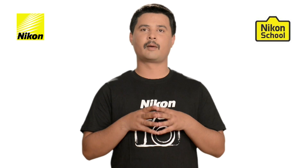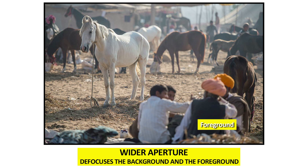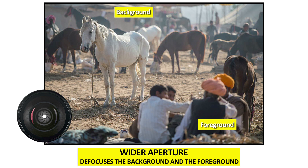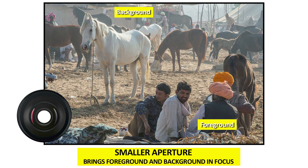Let's talk about the second role of aperture: controlling the depth of field. Here is an image in which the foreground as well as the background are both defocused, because we have used a wider aperture. The subject — the white horse — is in focus and crisp sharp, whereas the foreground and background are both defocused. Keeping the same subject, if you just keep your aperture small, you will see the foreground as well as the background both become crisp sharp. Hence, if you want both foreground and background in focus, you should have a small aperture.